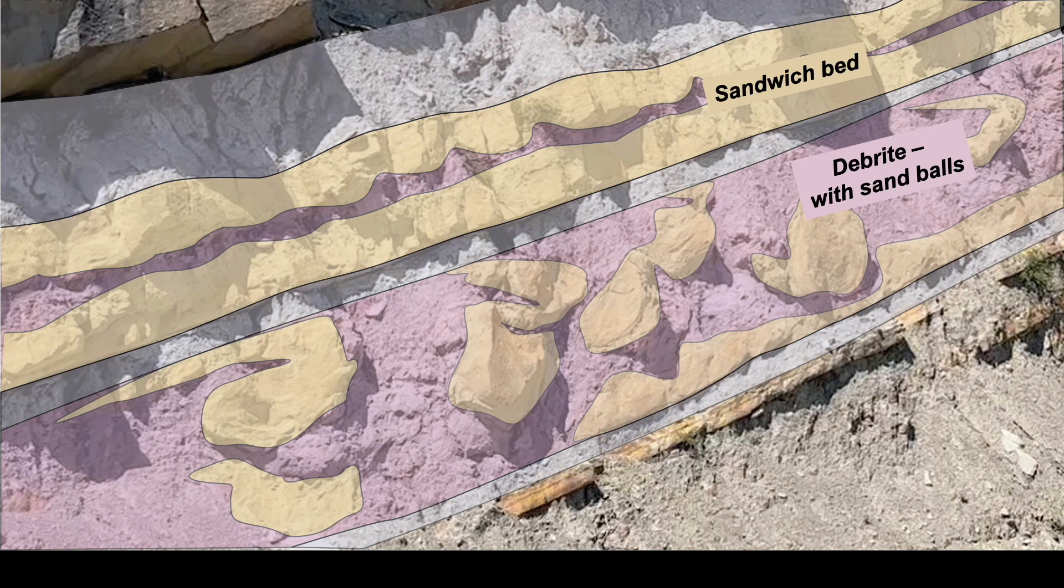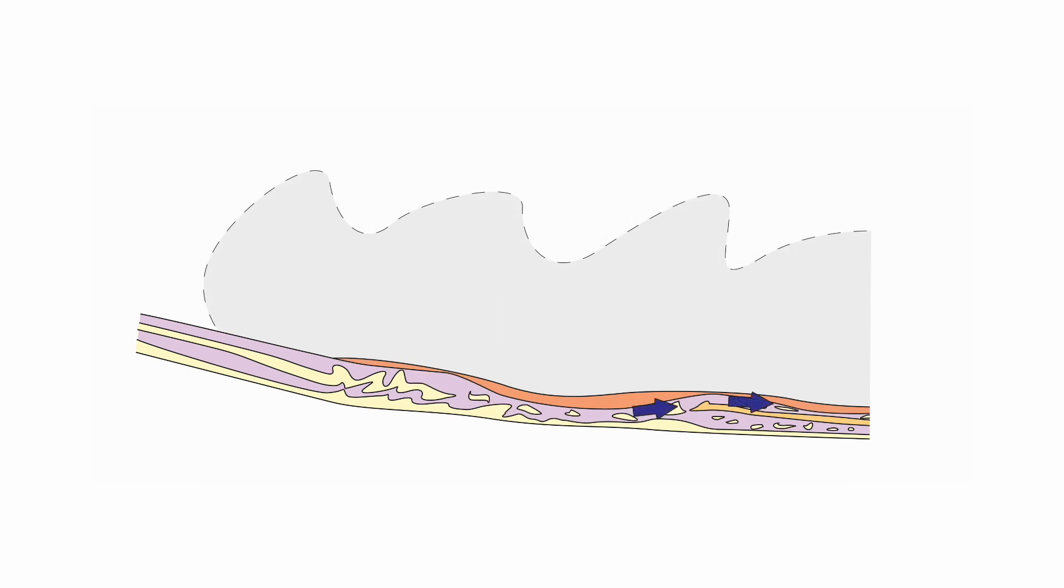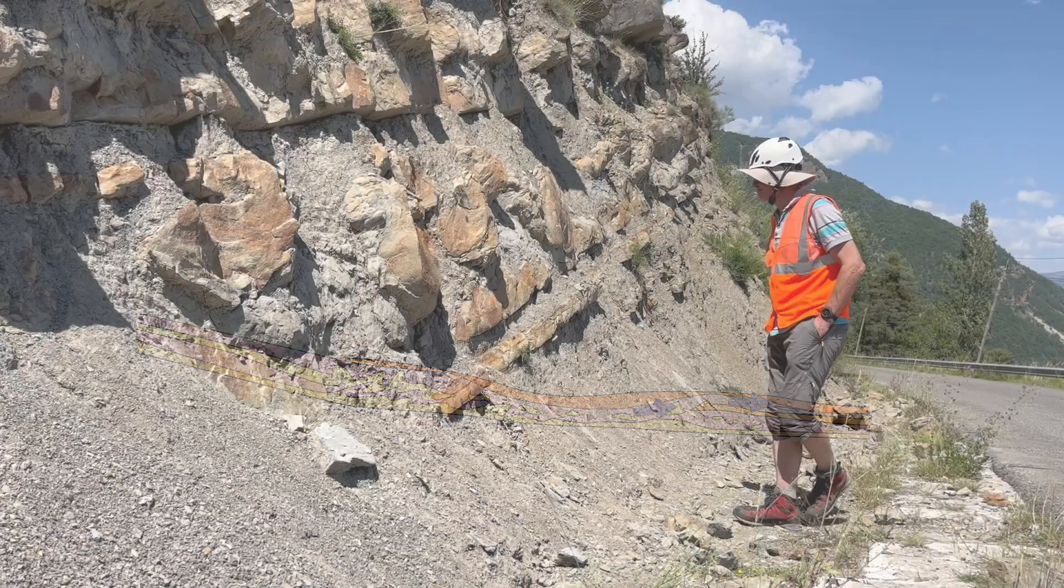These can be interpreted as deformed substrates. That's slightly older turbidites deposited by just earlier flows. The next flow runs over the slope, remobilizing the substrate, entrained with sand from this flow. And all this mess can then creep off down the slope. Leaving locally sourced debrites.